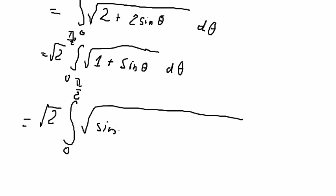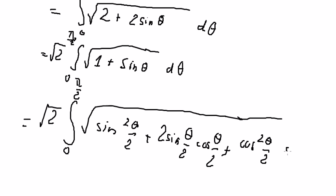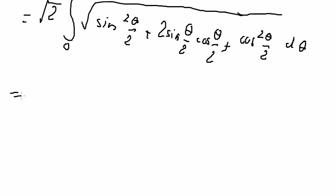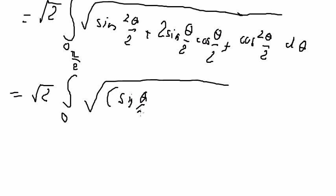We can express this as sine theta over 2 squared plus cosine theta over 2 squared. Since 2 sine theta over 2 times cosine theta over 2 equals sine theta, we get sine theta over 2 plus cosine theta over 2, all to the power of 2, dθ.